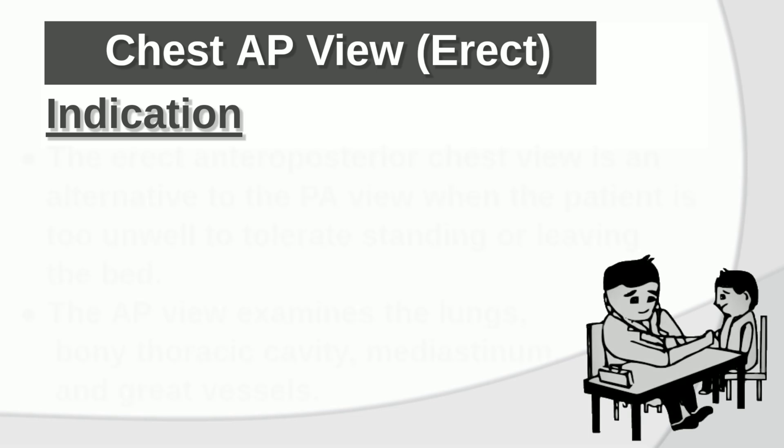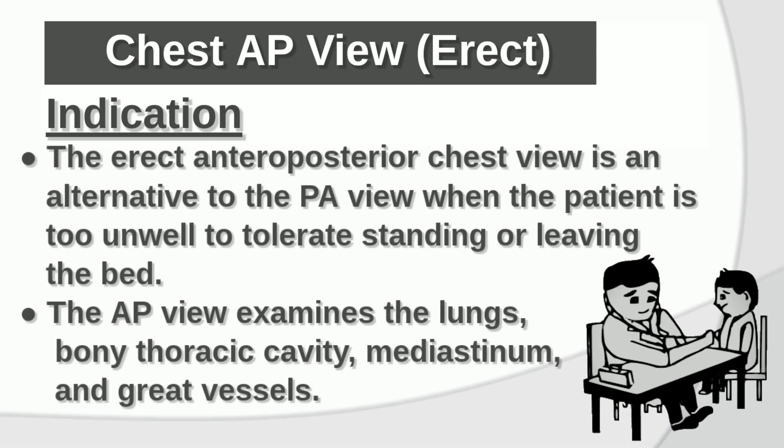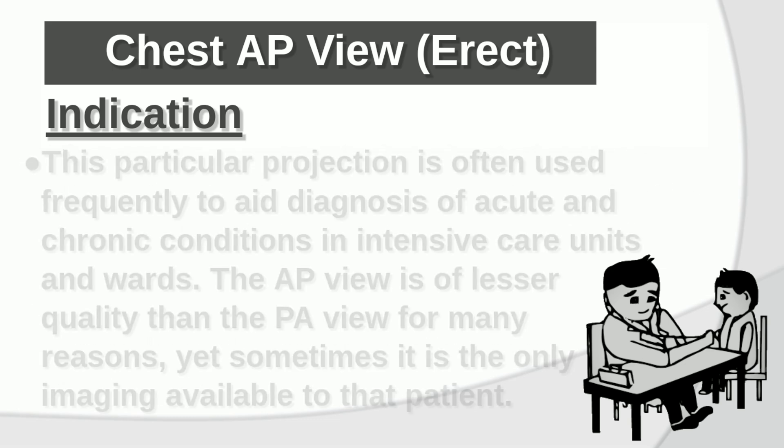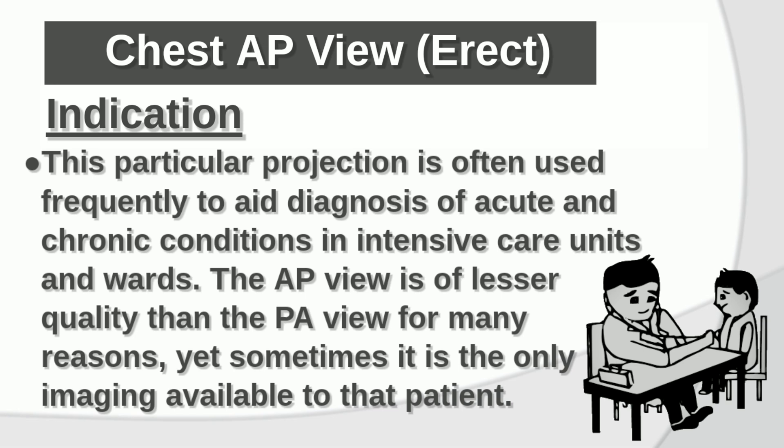Indication: The erect anteroposterior chest view is an alternative to the PA view when the patient is unable to tolerate standing or leaving the bed. The AP view examines the lungs, bony thoracic cavity, mediastinum, and great vessels. This projection is frequently used to aid diagnosis of acute and chronic conditions in intensive care units and wards. The AP view is lesser quality than the PA view for many reasons, yet sometimes it is the only imaging available to that patient.